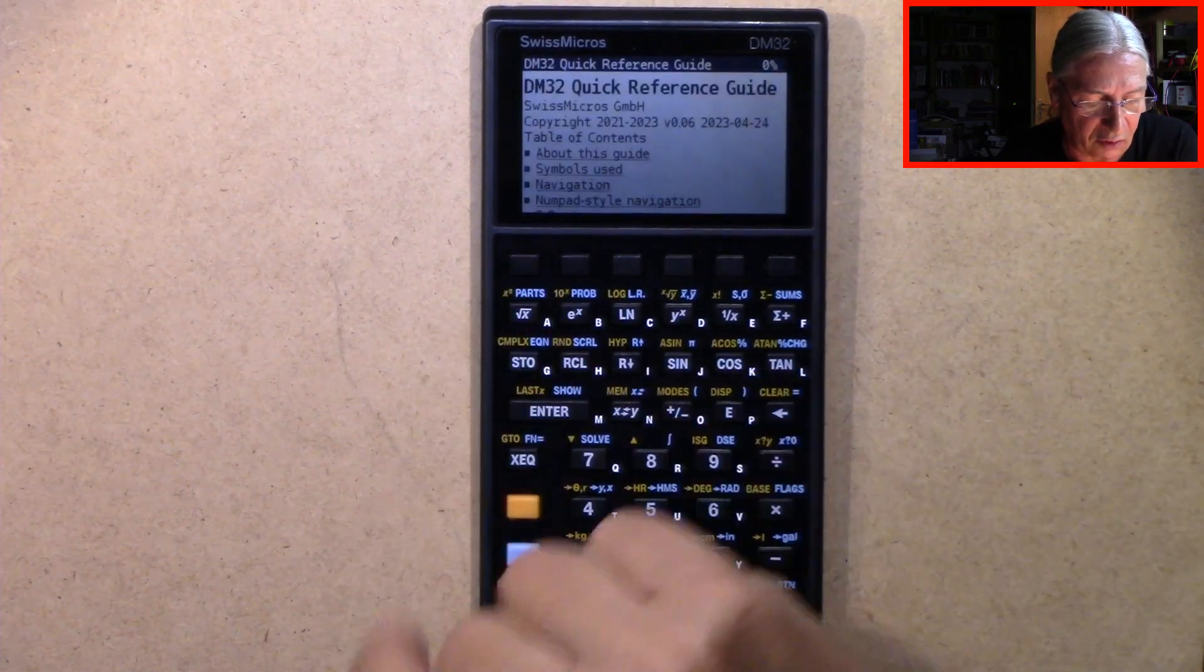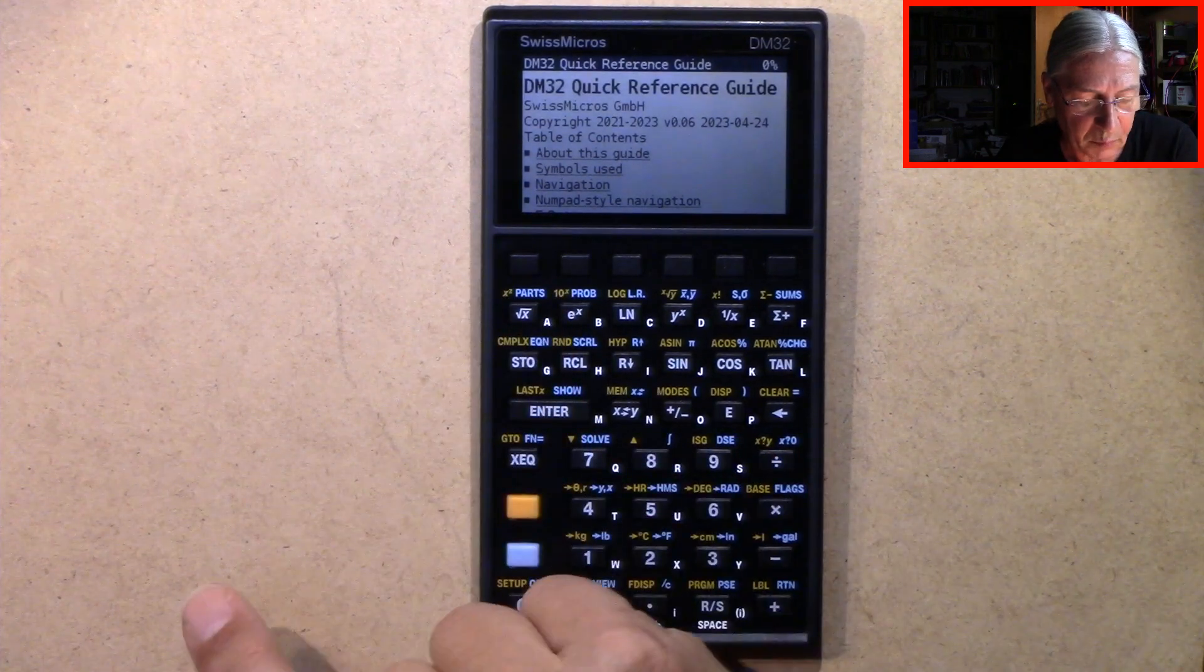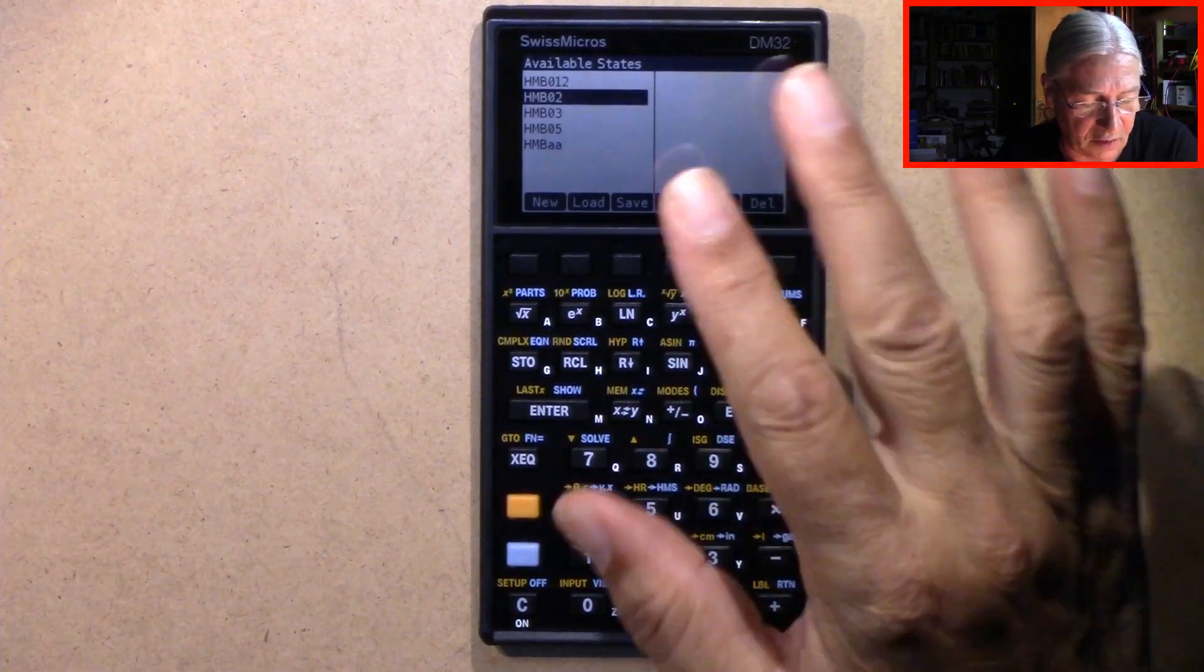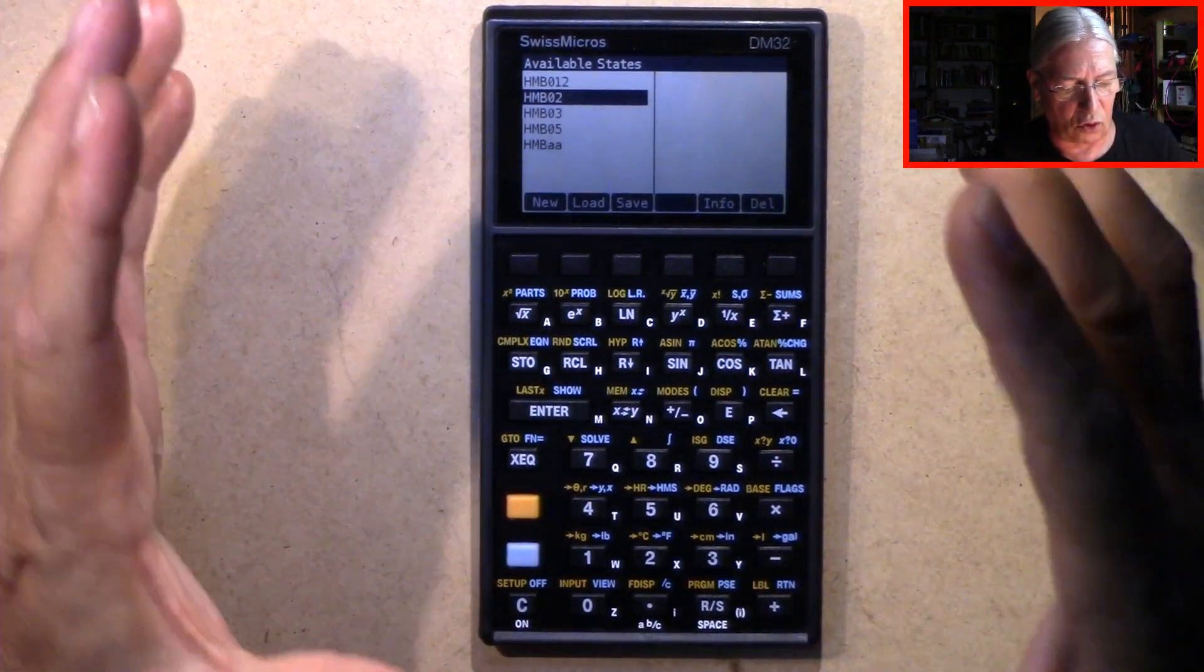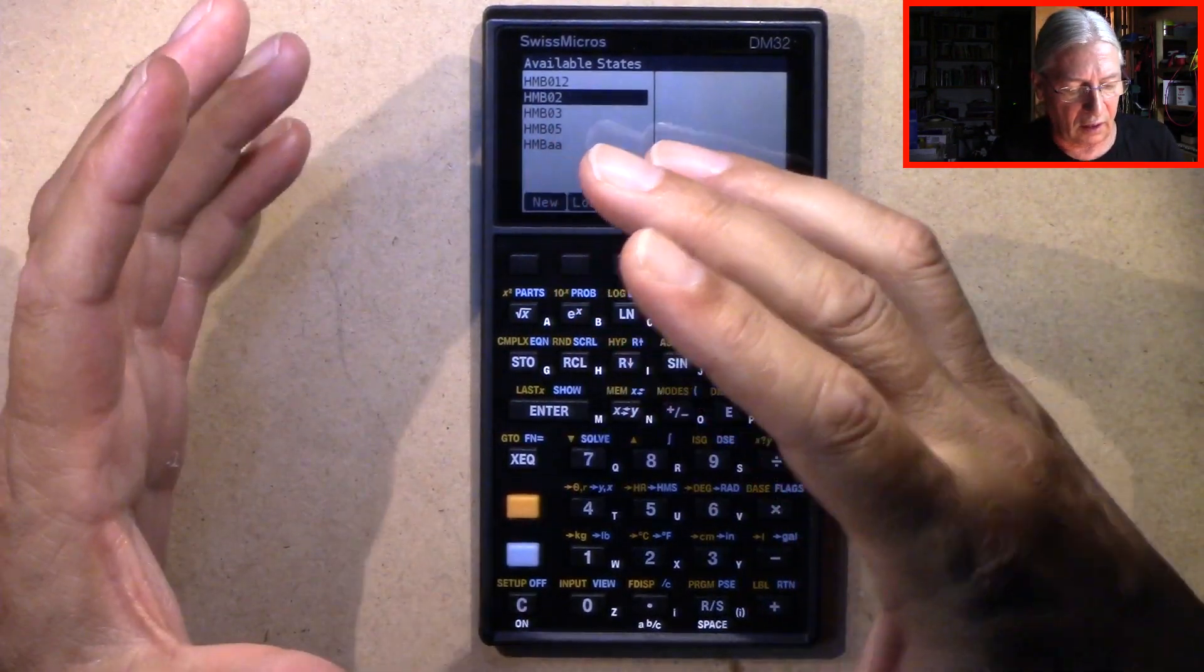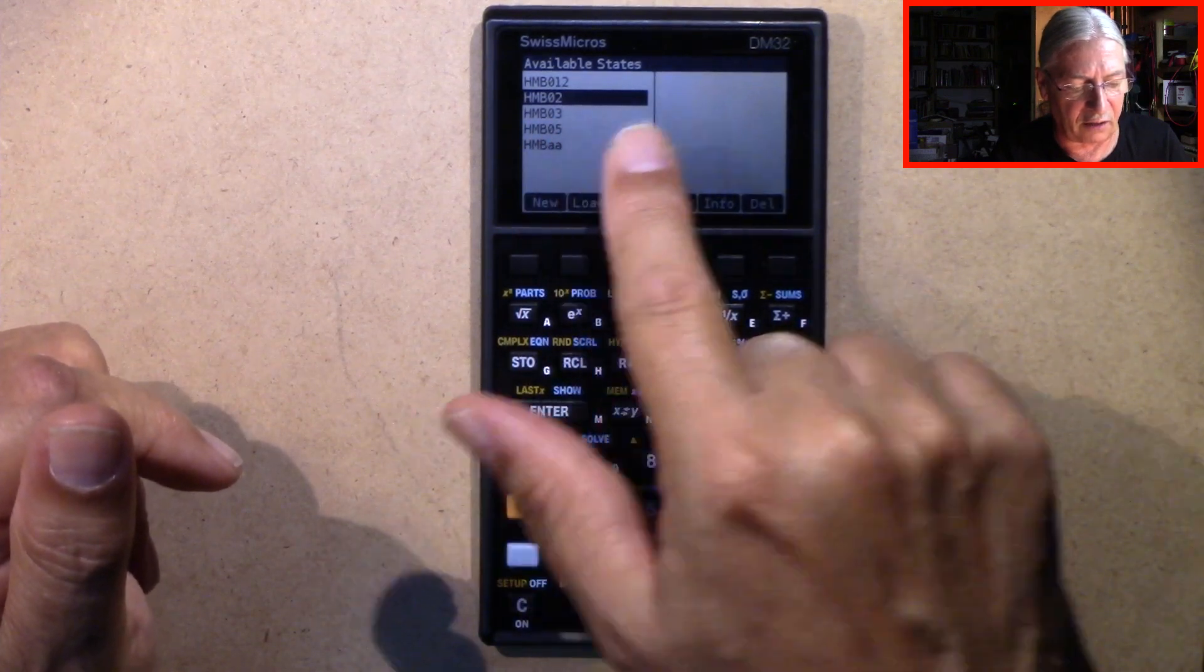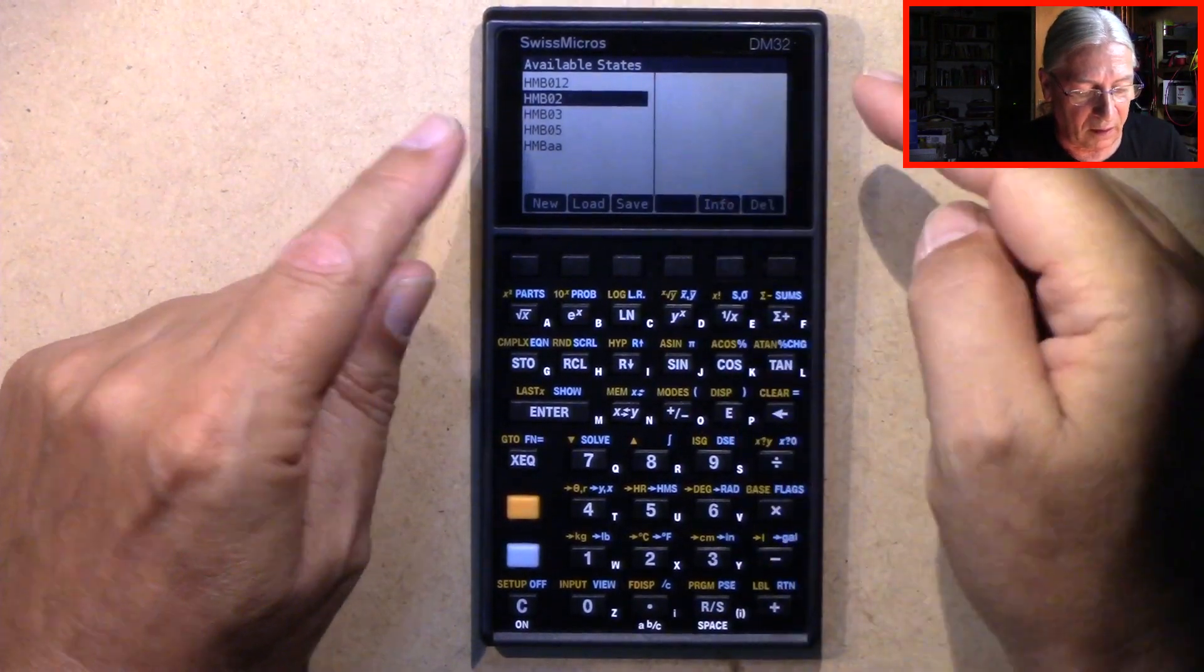We have the help file on the uppermost leftmost button, and button number four is to switch between calculator states. This basically means you have, for example, programs and equations stored in one state file and you can load this into memory. What we see here is available states, not available state files.